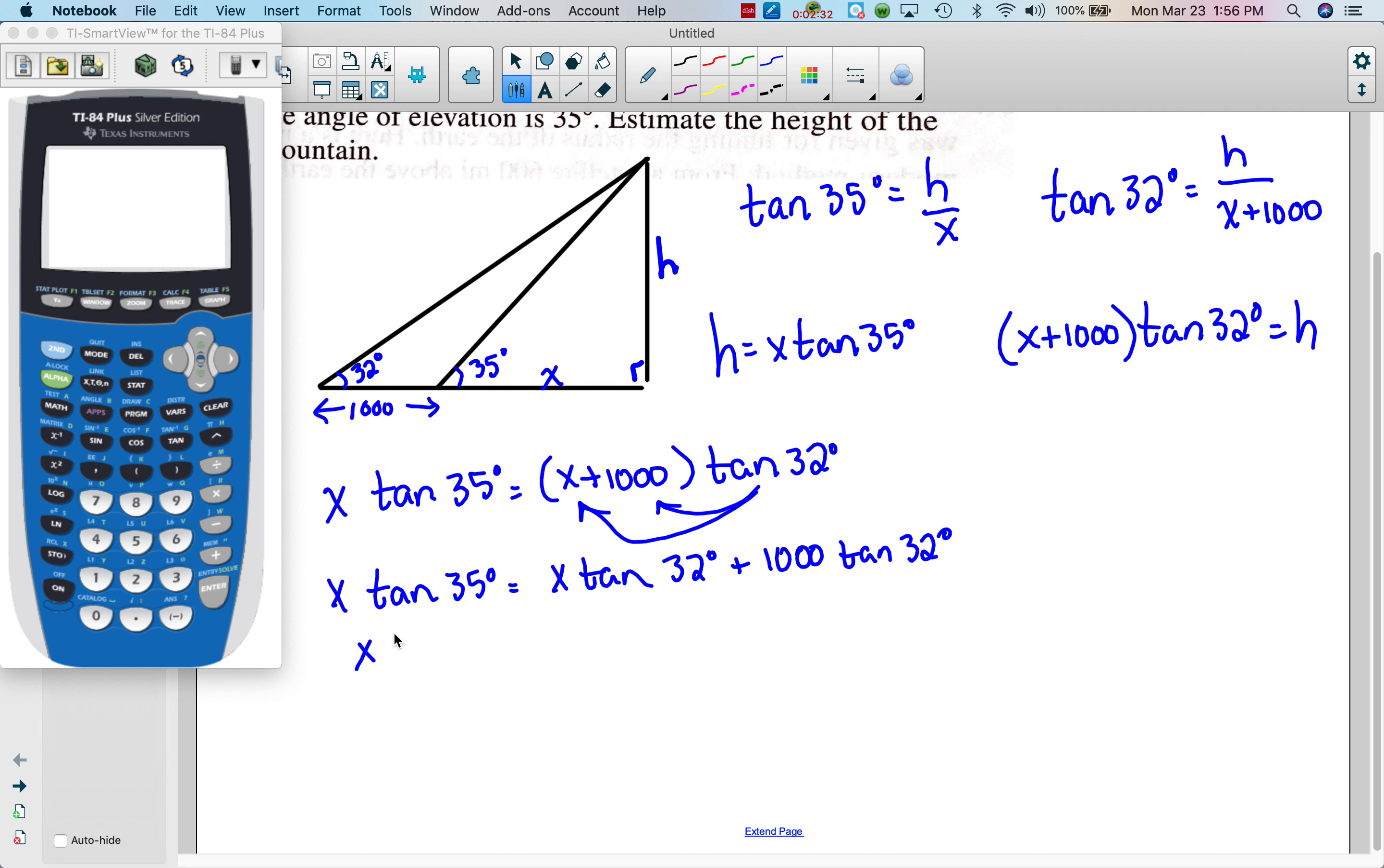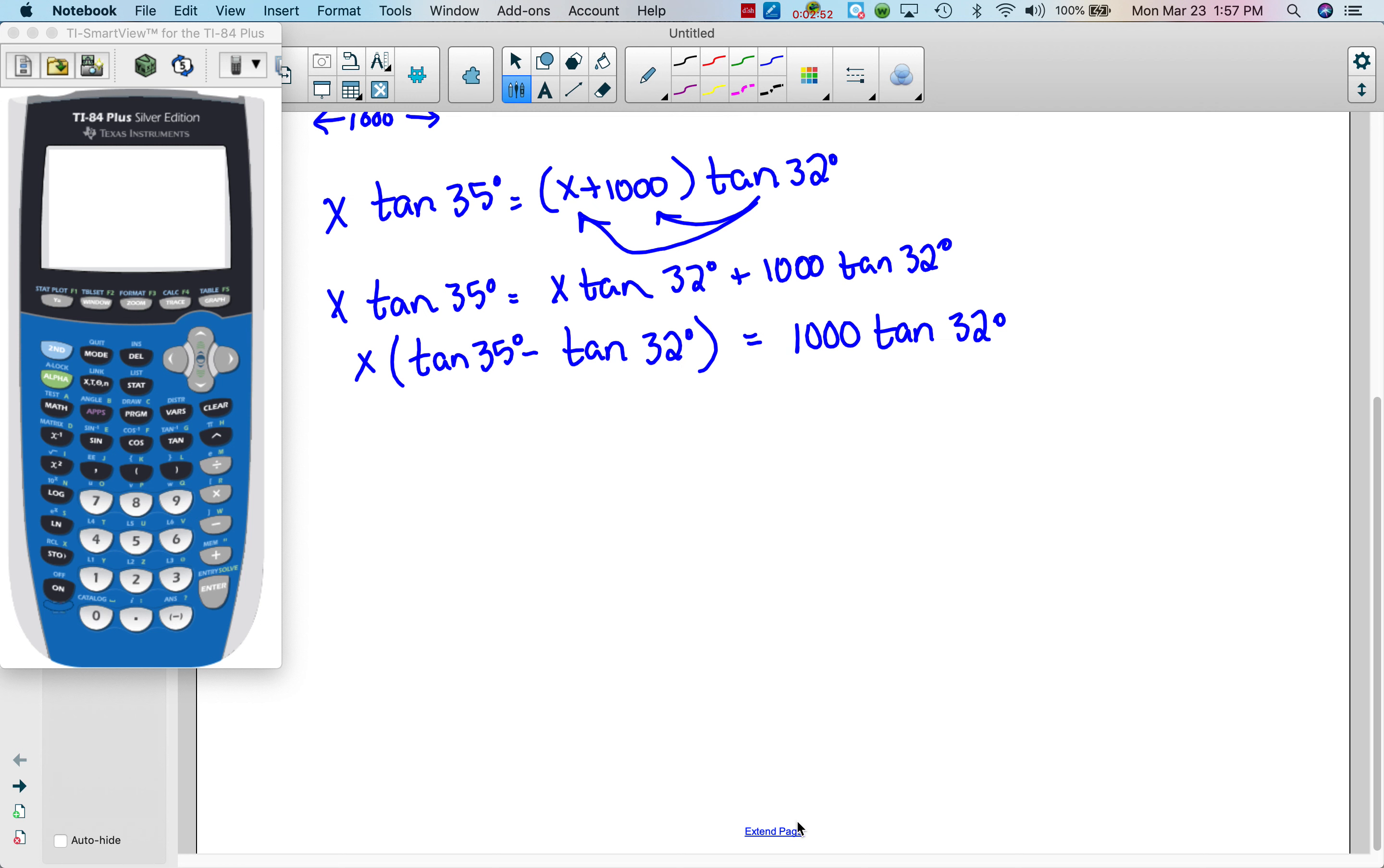Then we're going to regroup, so I'm going to move this, the one with the X to the other side. I'm going to do two steps at once, hope this doesn't mess you up. I'm going to subtract it but then I'm going to factor out the X, so I'm going to have tangent 35 degrees minus tangent 32 degrees. So I regrouped and factored in the same step.